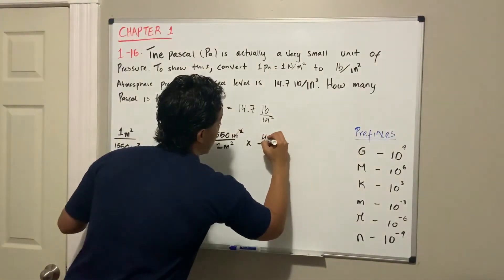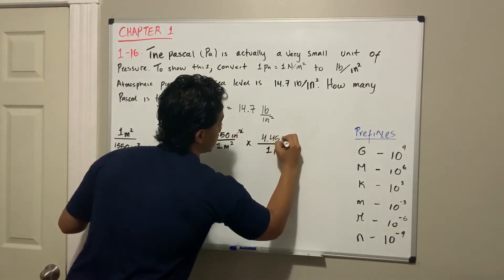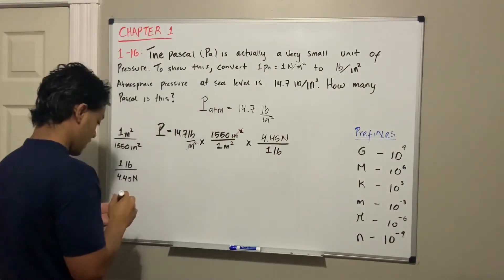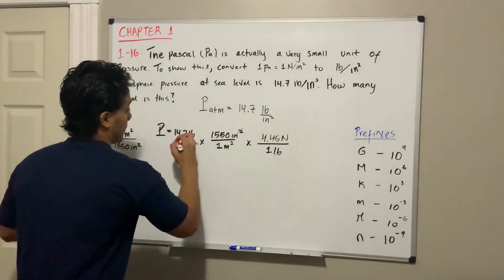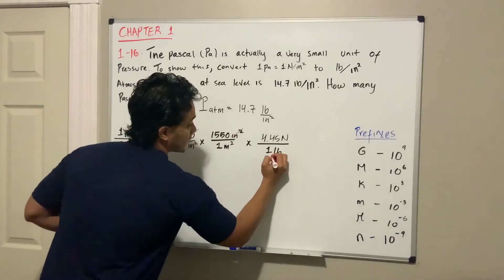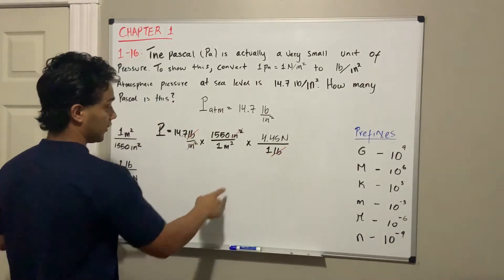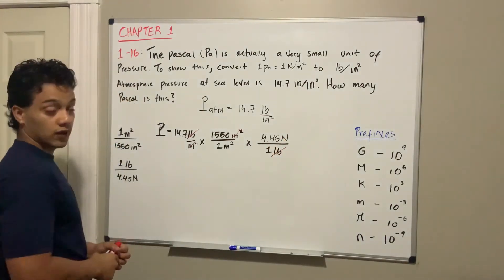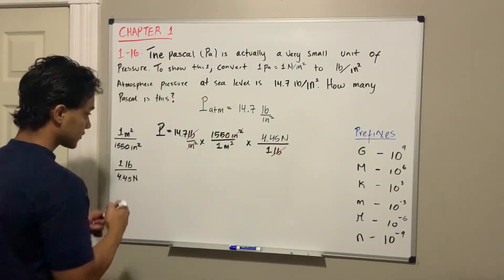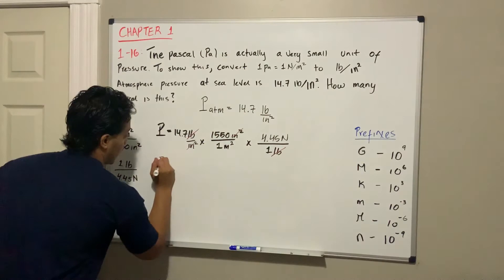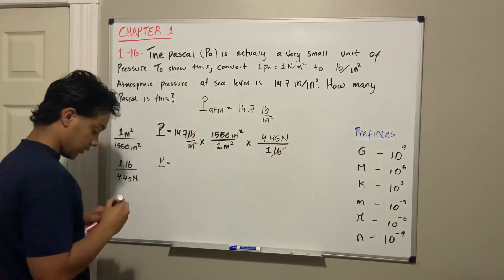That way my pounds cancel with my pounds, and I'm left with meter squared and Newtons, which is actually what a Pascal is. So my pressure at the end is going to be equal to...